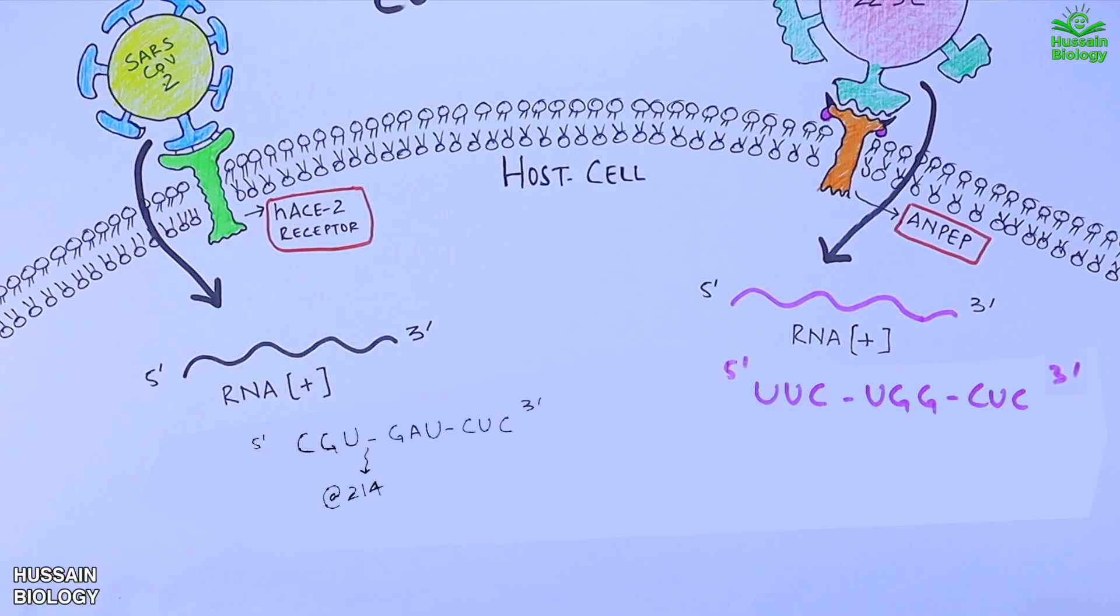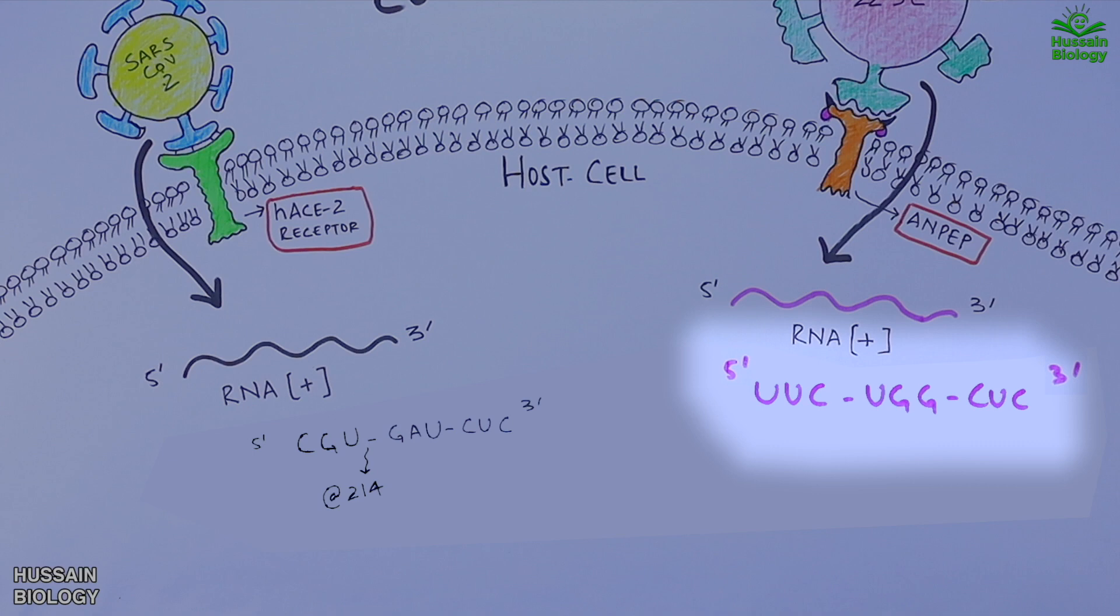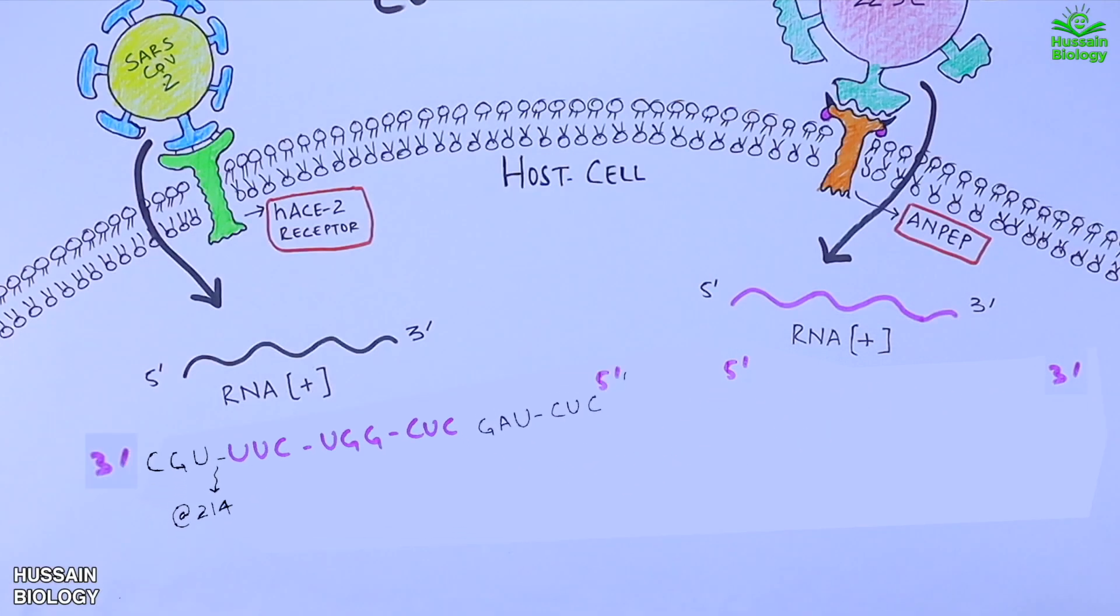So what actually happens is that the sequence from 229E virus is inserted into the SARS-CoV-2 at 214 position as shown in the diagram. And this all happens with a mechanism called template switching which we are going to see now.